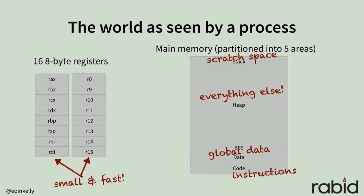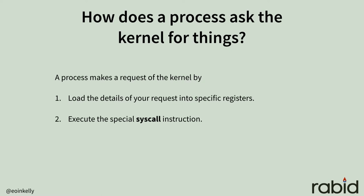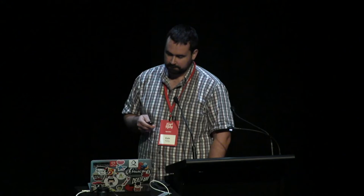A process can't really do anything for itself — it can run computations and shuffle data between storage areas, but really all that achieves is heating up the CPU. So if it wants to do anything, it has to make system calls. It's a two-step process: you load the details of your request into specific registers, and then the process issues the special syscall instruction. Once things have been loaded into registers, the kernel will read those registers, do whatever it has been requested to do, put the results back into the registers, and give control back to the process.